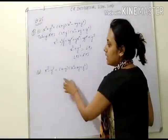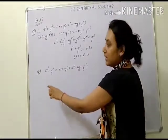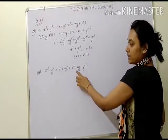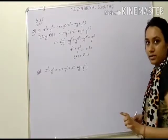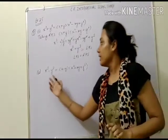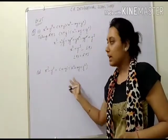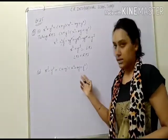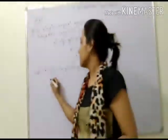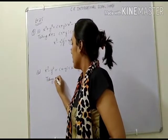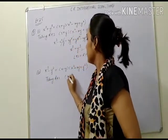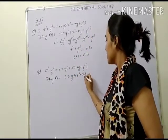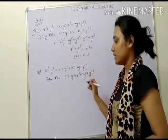Next, we have to verify that x cubed minus y cubed is equal to x minus y, into x squared plus xy plus y squared. Taking RHS, RHS is equal to x minus y into x squared plus xy plus y squared. We need to simplify the RHS.